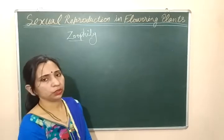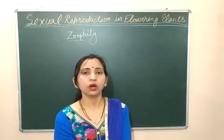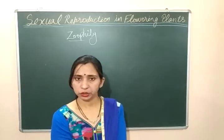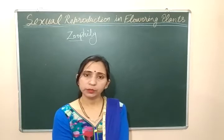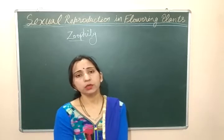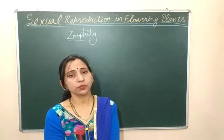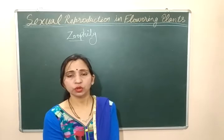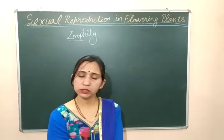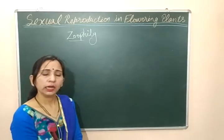Today we will discuss about zoophily. In the case of zoophily, the insects are the most common pollinating agents, which are used in many types of flowers for pollination. The most important pollinating agent is insects. When insects are used as a pollinating agency, then pollination is known as entomophily.